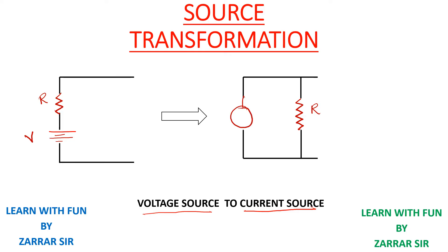There is one important thing: where is the positive sign? If this positive sign is on the top, that means the current will move from the lower end towards the upper end — a down-to-up approach. So remember: if your positive voltage is on the top side, your direction of the current is upward.